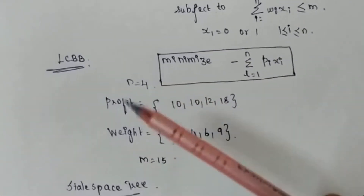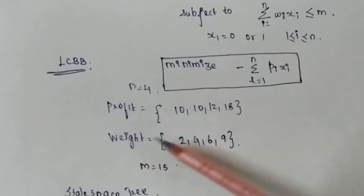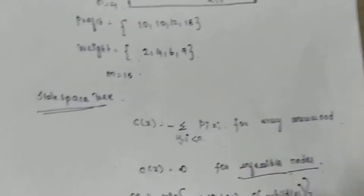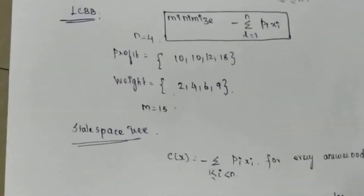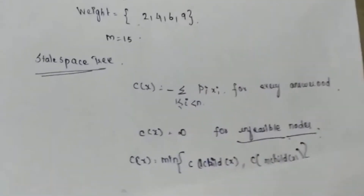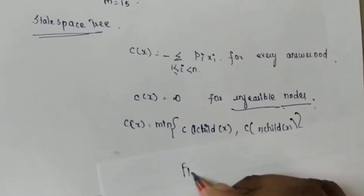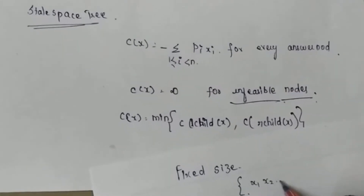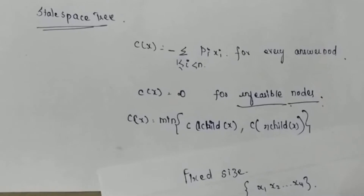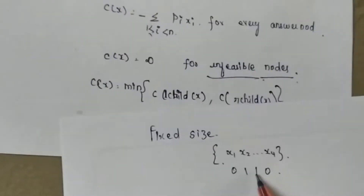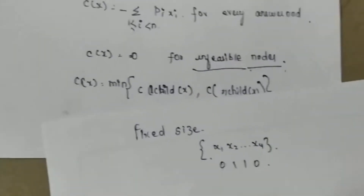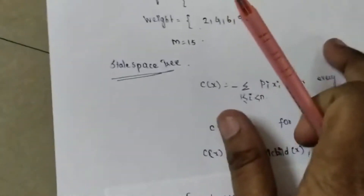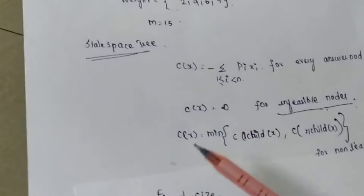For our example, n=4 items are given. Profits are 10, 10, 12, 18 and weights are 2, 4, 6, 9. The knapsack capacity is 15. We construct a state space tree using a fixed-size tuple, so the output will be in the form (x1, x2, x3, x4), where each xi is 0 or 1. For each node we need to find two values: cost and upper bound.